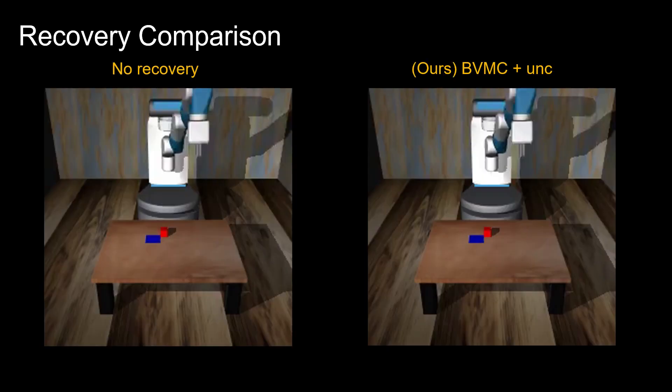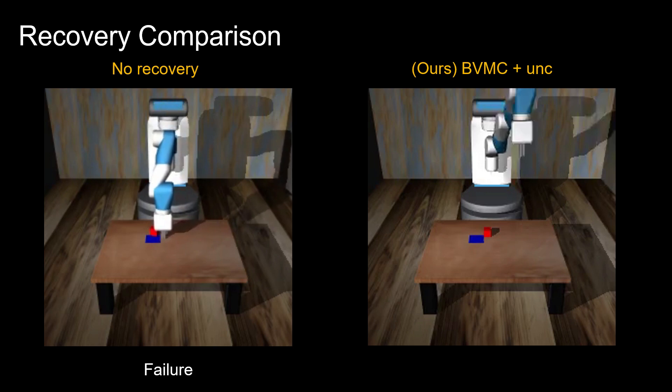We compare our proposed method with a no-recovery baseline. On the left, we see the robot first aligns the cube with the target by pushing sideways, but it then fails to move the gripper behind the cube.